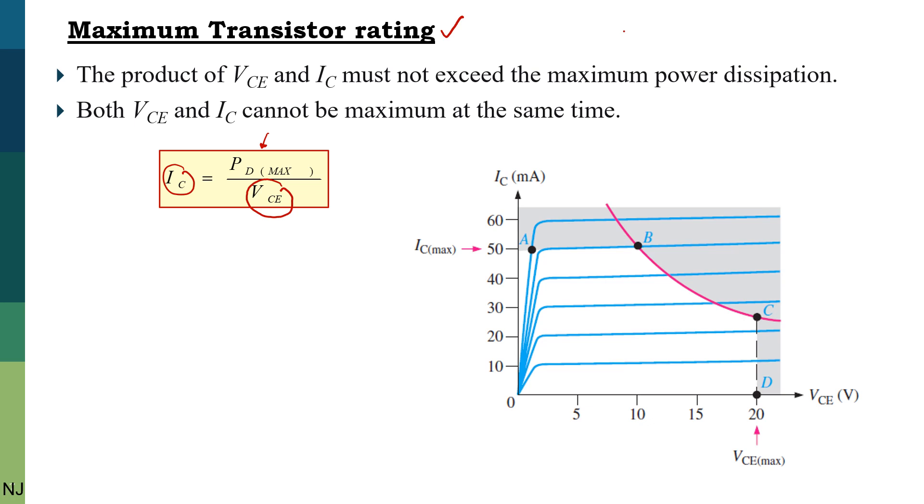But the product of IC and VCE must not exceed the maximum power dissipation. For any given transistor, a maximum power dissipation curve can be plotted on the collector characteristic curve. Looking at the graph, the IC max or maximum collector current is 50 milliamps, while the maximum VCE is 20 volts.